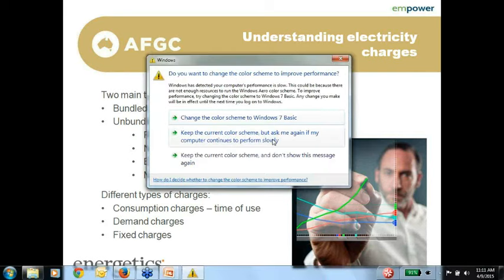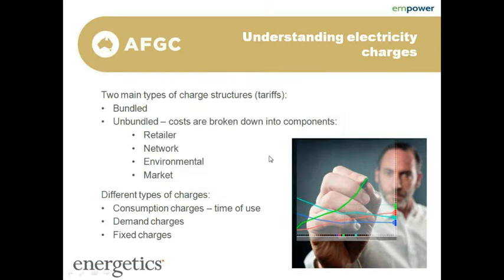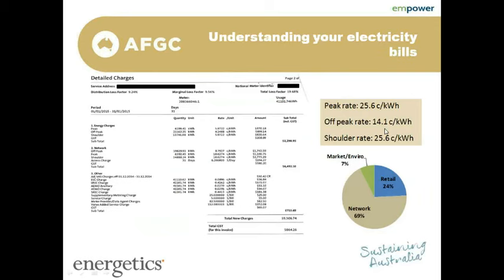Market charges are smaller and cover the market operator's costs to balance frequencies and loads. Within those four different areas of charges, there are three charge types: a consumption charge — and you'll often see time-of-use charges within that, showing peak, off-peak and potentially shoulder times; demand charges based on instantaneous power draw from the network; and fixed charges, which are a set rate per bill, per month or per day.